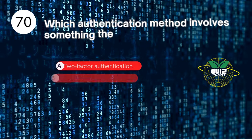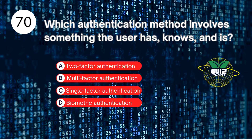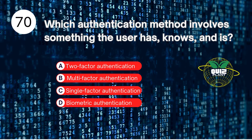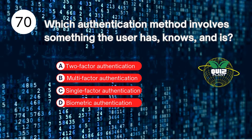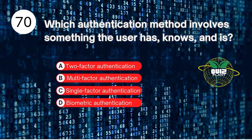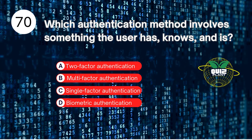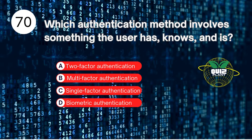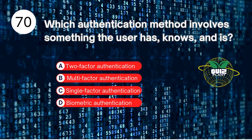Number 70. Which authentication method involves something the user has, knows, and is? A. Two-factor authentication. B. Multi-factor authentication. C. Single-factor authentication. D. Biometric authentication. The answer is B. Multi-factor authentication.